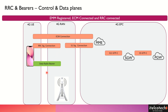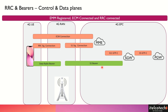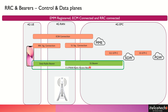Now let's look into the user plane. If a user wants to access data and goes towards the network, it has to first establish a radio bearer at the radio level between the UE and the eNodeB. Then there would be an S1 bearer built up between the radio access network and the EPC. Both combined make up the E-UTRAN radio access bearer.